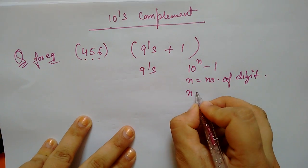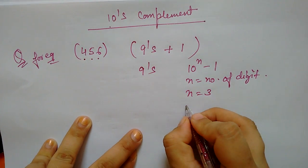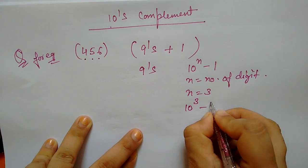1, 2, 3. So, what is the value of n? 3. Now, 10 to the power of 3 minus 1.